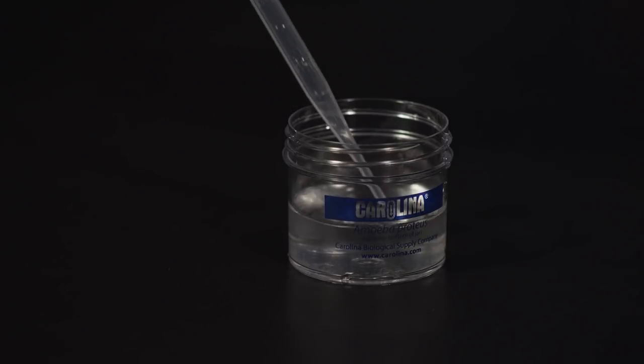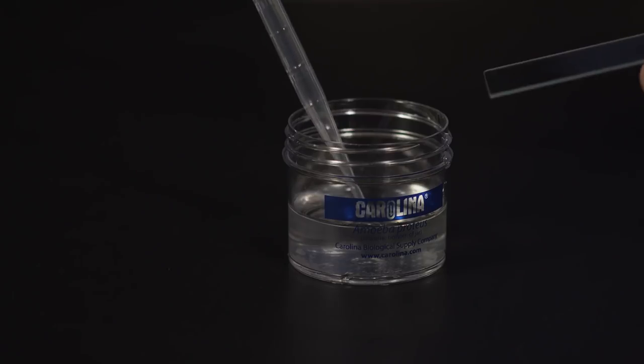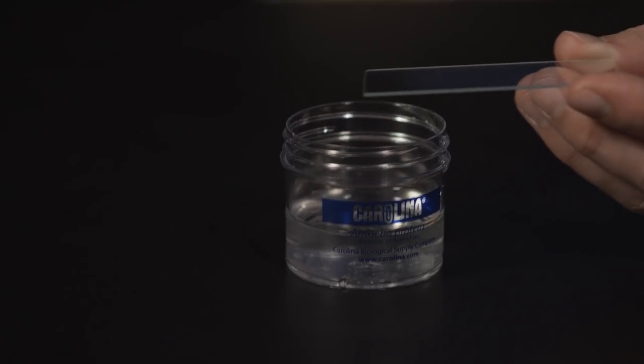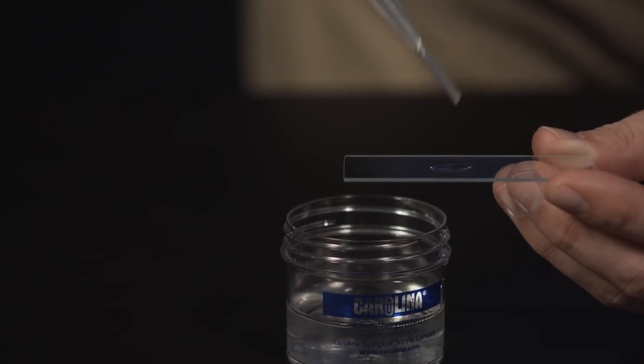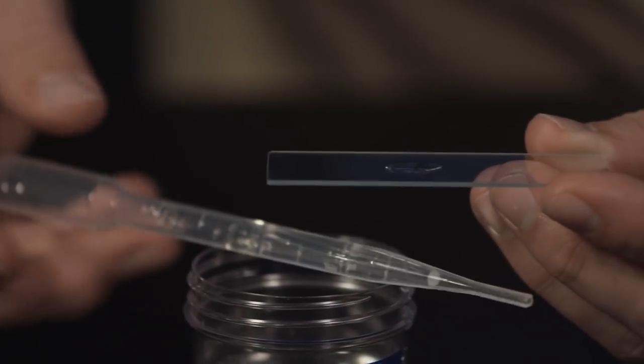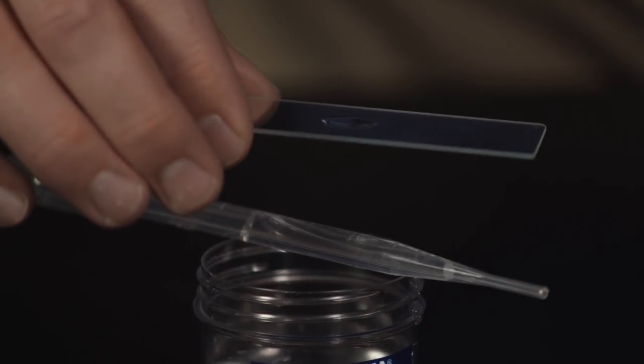Gently aerate the decanted culture jar to suspend the amoeba, creating a concentrated amoeba mixture. Remove the pipette from the jar and slowly expel a drop onto a clean slide. Gently place the cover slip onto the drop.